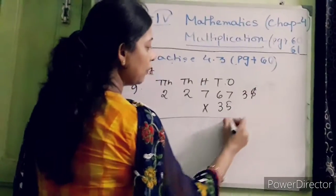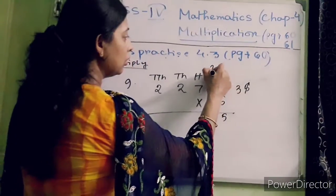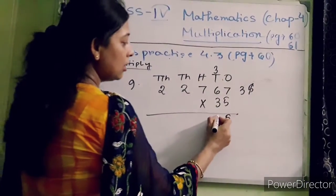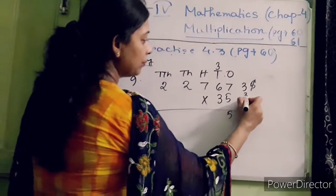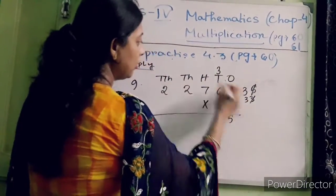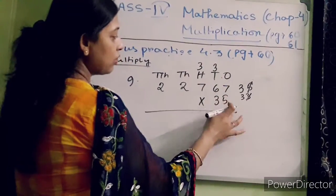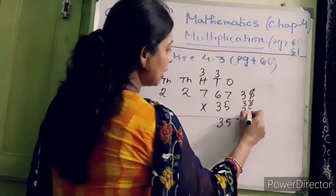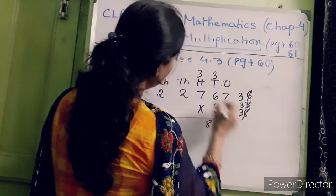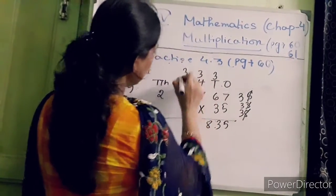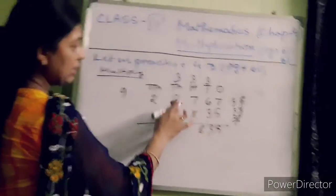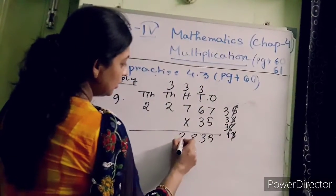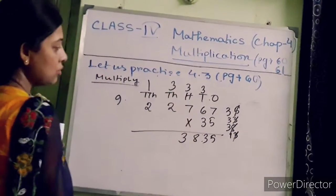Cut five and write here, put three on the tens place. Five into six is thirty, thirty plus three is thirty-three — cut three and write three on the hundreds place. Five into seven is thirty-five, thirty-five plus three is thirty-eight — cut eight and write here, three on the thousands place. Five into two is ten, ten plus three is thirteen — write three here and one on the ten-thousands place. Five into two is ten, ten plus one is eleven.